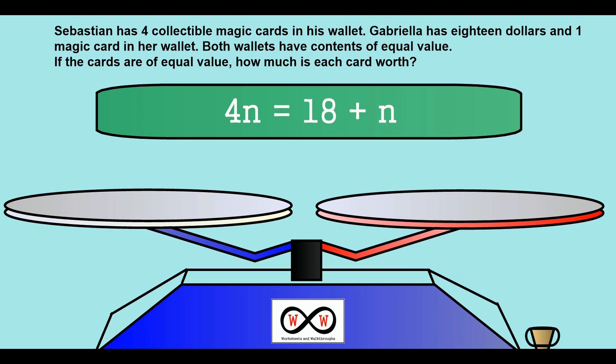Below this problem we have an equation: 4n equals 18 plus n. You might be thinking, what are those n's all about? Well, n is our variable. We're looking for a value for n that would make this equation true, so each side would have an equal value and it would all balance out.